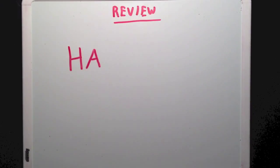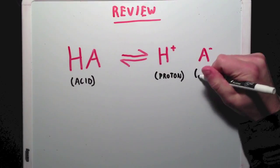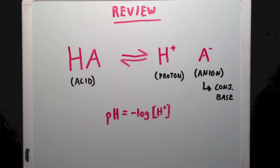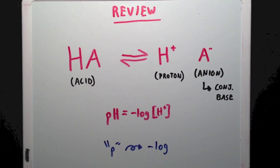Let's review. When an acid is thrown into a solution, it will donate a proton and leave behind an anion or conjugate base. Remember that the pH of a solution is equal to the negative log of the proton concentration, since p is a symbol for negative log.